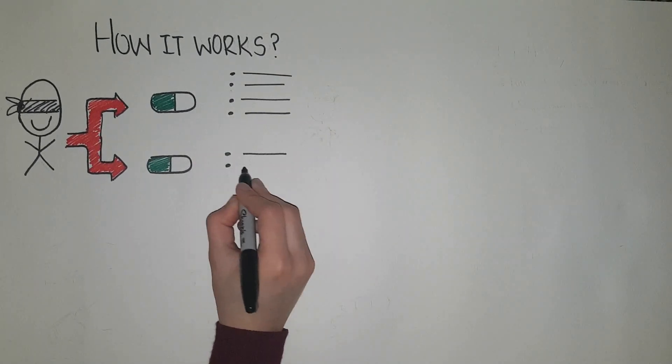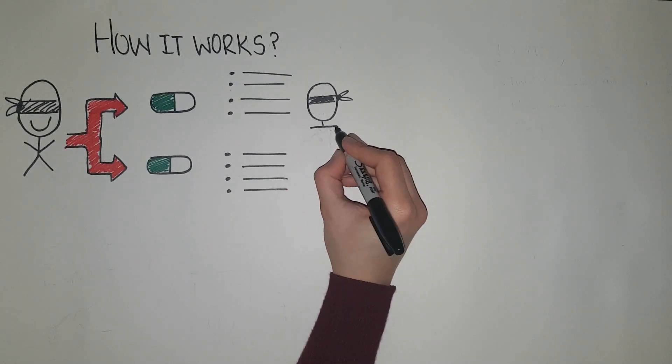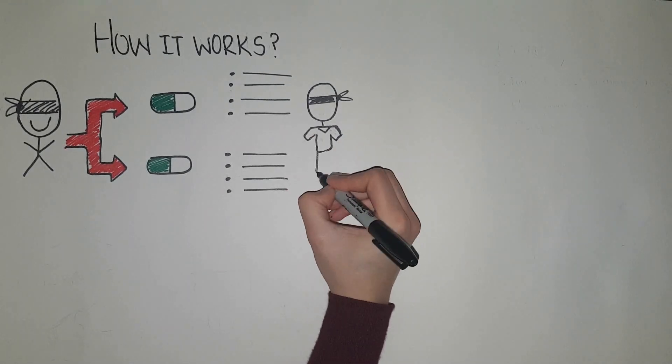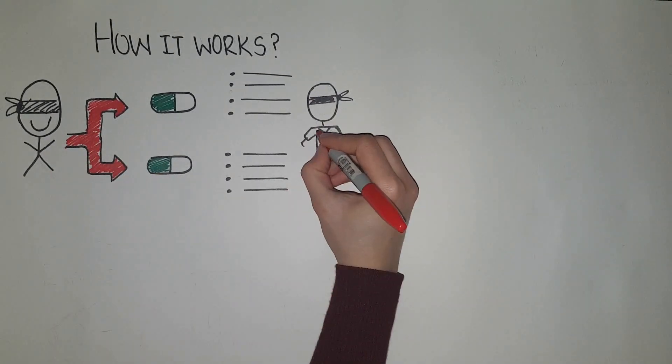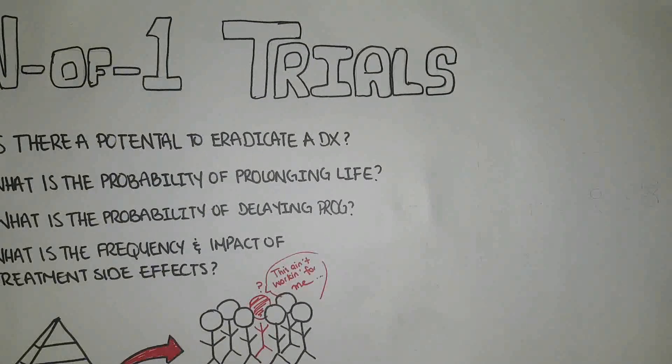Then, the patient's performance to the treatment is recorded according to the outcomes of interest. It should be noted that whoever is measuring these outcomes is also blinded, making the N-of-1 trial a double-blind randomized controlled study.